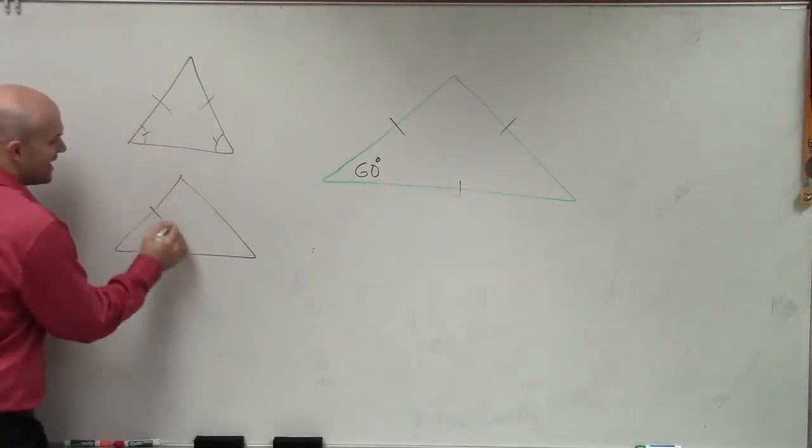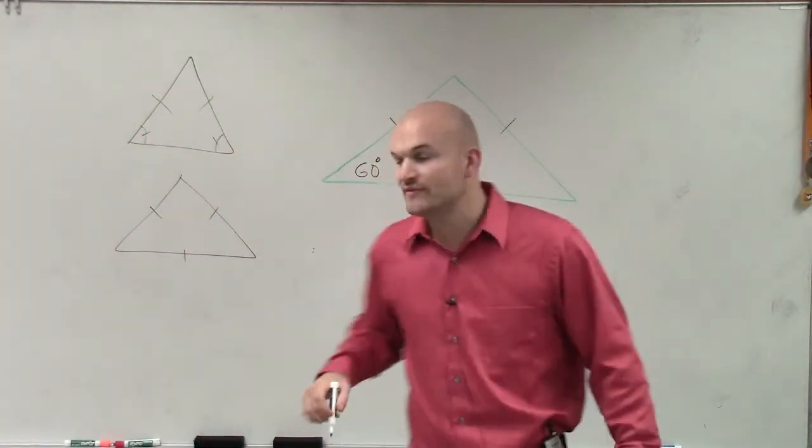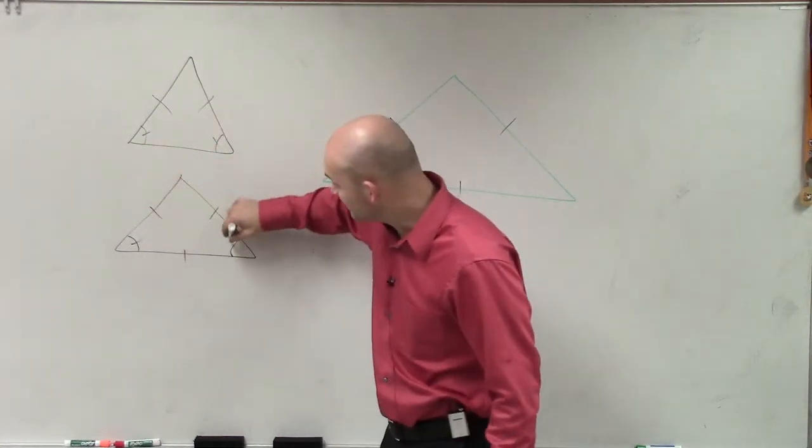Now what happens if I had all three angles equal in measure? Well, what we figured out was when we have all three angles equal in measure, we know that these two have to be equal in measure.